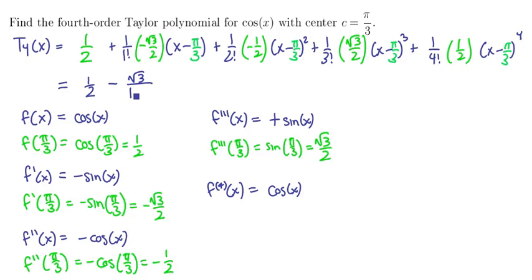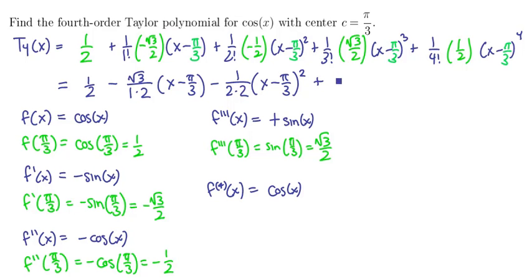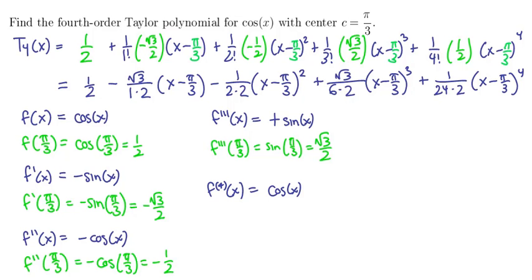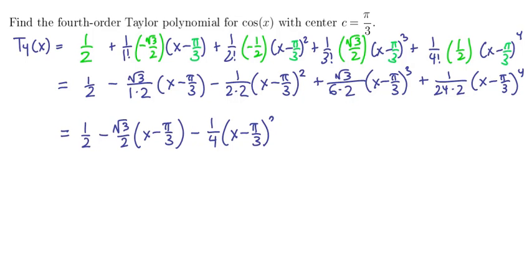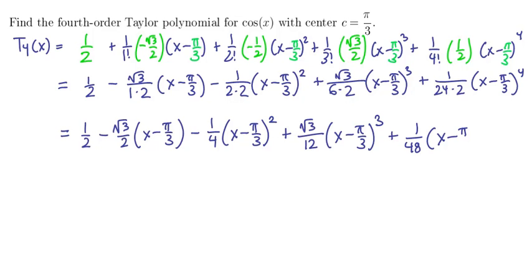We get 1 half, minus root 3 over 2 times (x minus pi over 3), minus 1 over 4 times (x minus pi over 3) squared, plus root 3 over 12 times (x minus pi over 3) cubed, plus 1 over 48 times (x minus pi over 3) to the fourth power. That is our cleaned-up fourth-order polynomial.